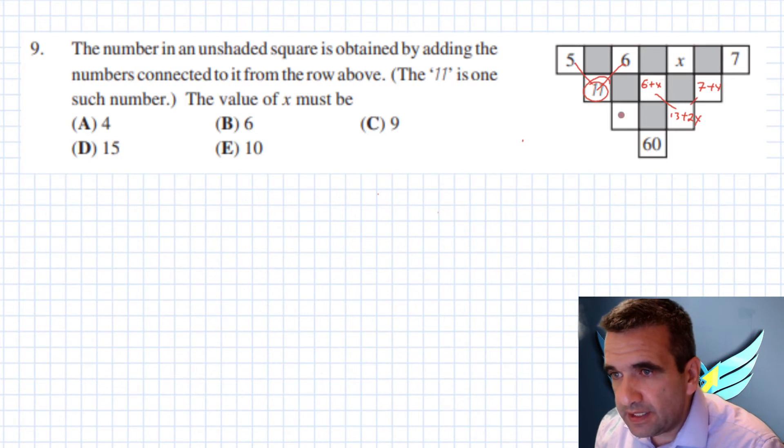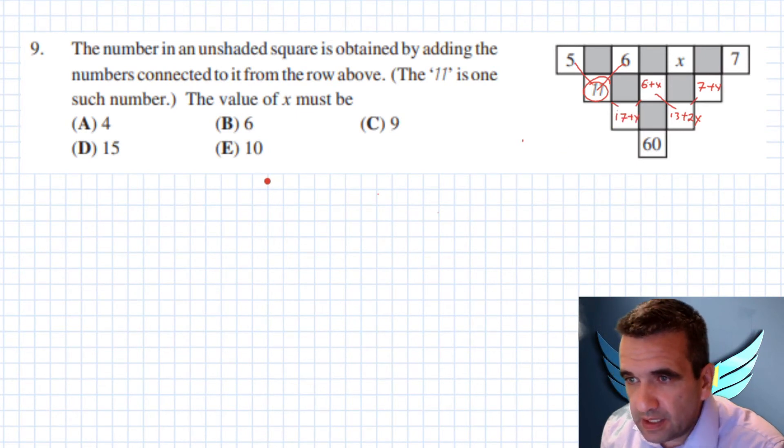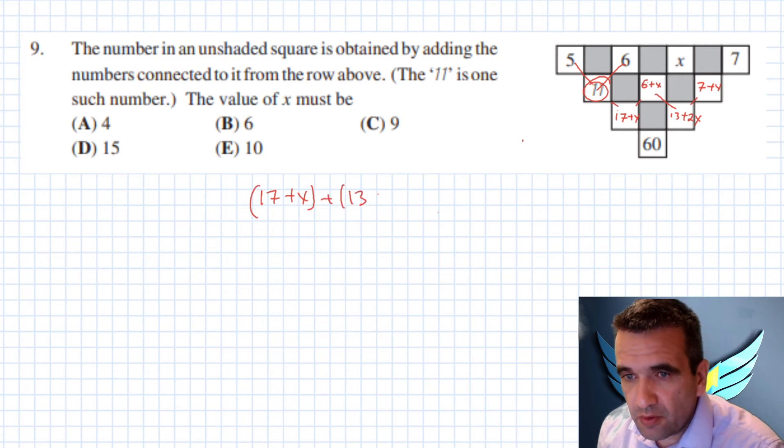And here in this cell we'll have 11 plus 6 is 17, 17 plus x. So our equation looks like 17 plus x plus 13 plus 2x equals to 60. So we open brackets, 17 plus x plus 13 plus 2x equals to 60.